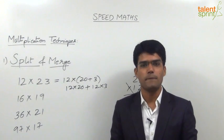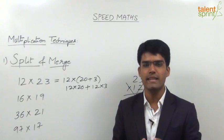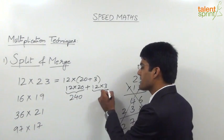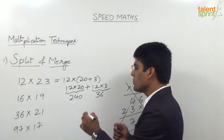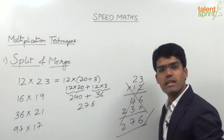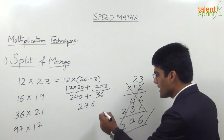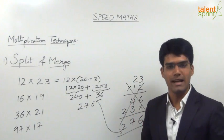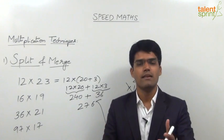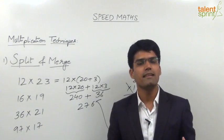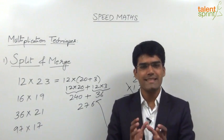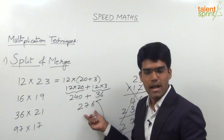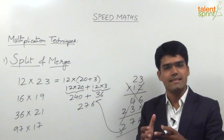12 taken 20 times gives 240 — because 12 into 2 is 24, so 12 into 20 is 240. And 12 into 3 is 36. When we merge these calculations, 240 plus 36 is 276. Compared to the regular procedure, we get the same answer. You need not write these steps — just visualize them. 23 is 20 plus 3; 12 taken 20 times is 240, 12 taken 3 times is 36, and 240 plus 36 is 276.